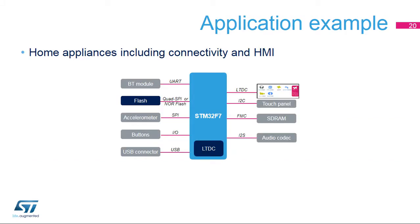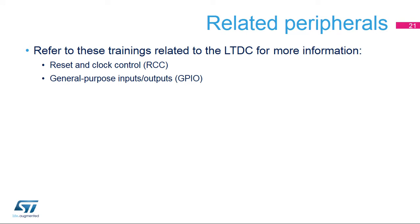Graphic applications require a high-quality user interface, which can be achieved using the STM32F7 to connect a display via the LCD TFT controller. The FMC or Quad SPI interface may also be used to access external flash memory containing graphical content such as background images, high-resolution icons, or fonts to support multiple languages. Related peripherals include Reset and Clock Control (RCC) and General Purpose Inputs-Outputs (GPIO); refer to those peripheral trainings for more information.